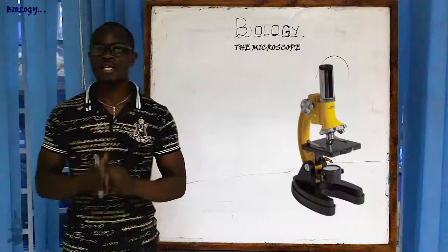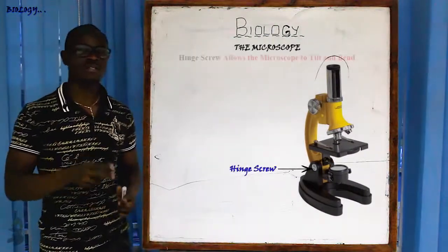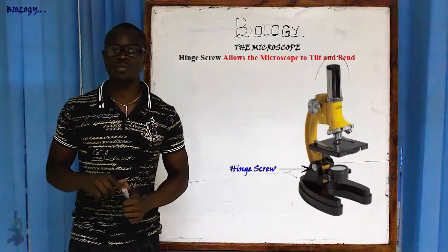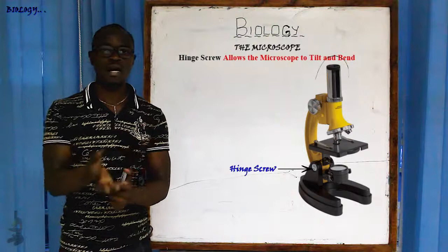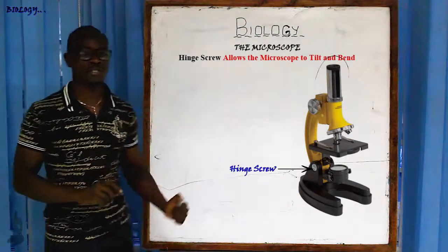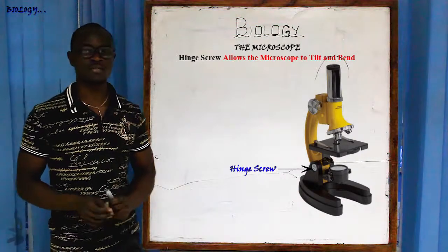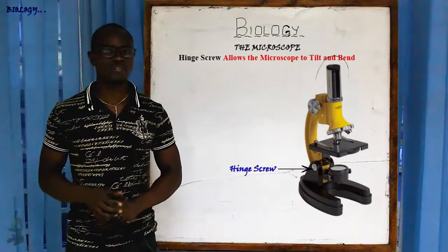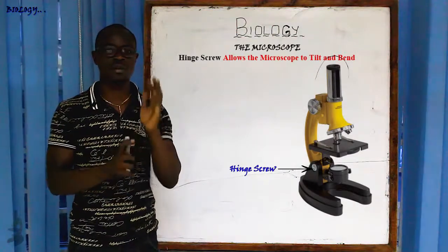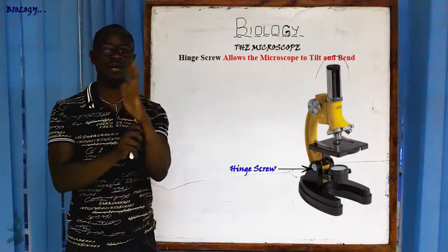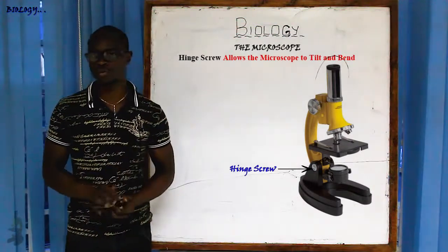Next we have the hinge screw. The function of the hinge screw is to allow the microscope to bend and tilt. The hinge screw is found at the central part of the microscope, and it provides the support needed for the microscope to tilt in any direction.